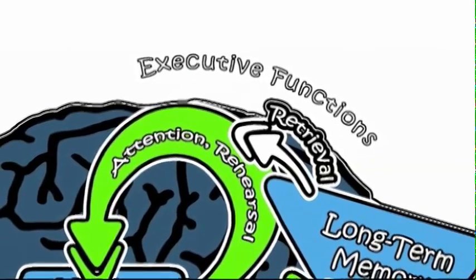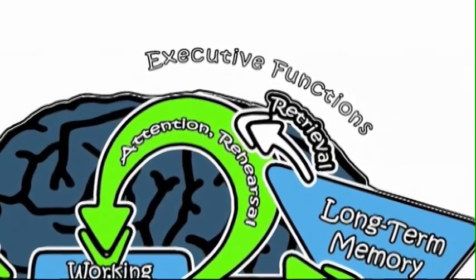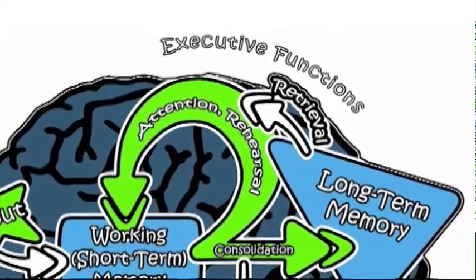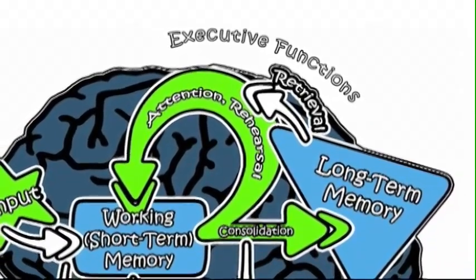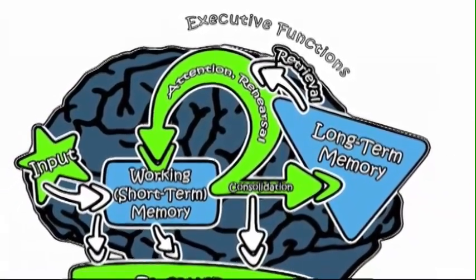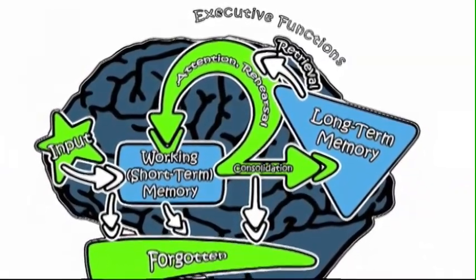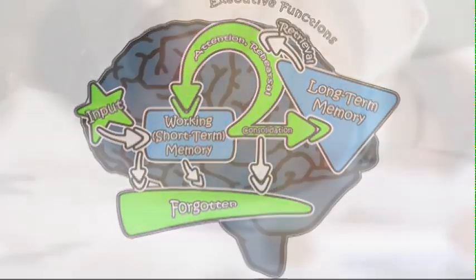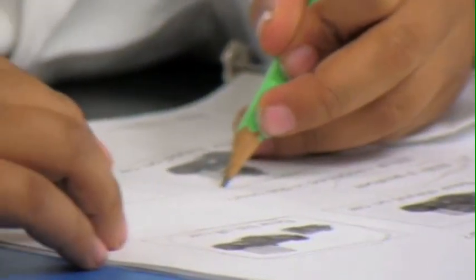As the information processing model suggests, attention is required throughout information processing. No new information can be consolidated into long-term memory if we do not attend to it. Executive functions are involved in helping students decide what they should focus their attention on in any given circumstance. Thus, executive functions oversee and guide almost all areas of information processing and learning. Simply inputting information into the brain doesn't necessarily lead to learning, because unless information is further processed, it's going to be forgotten.